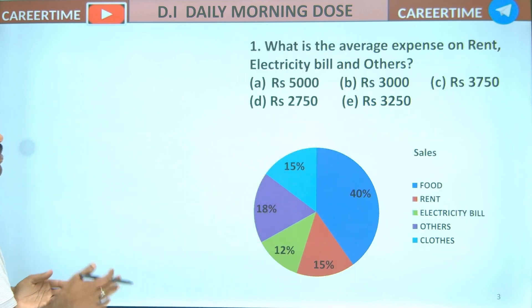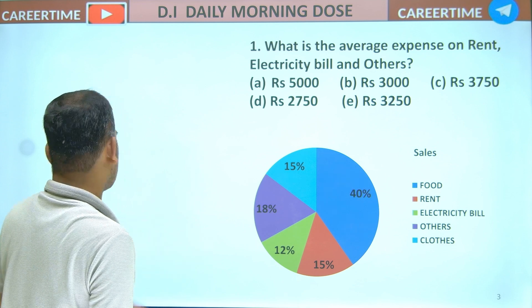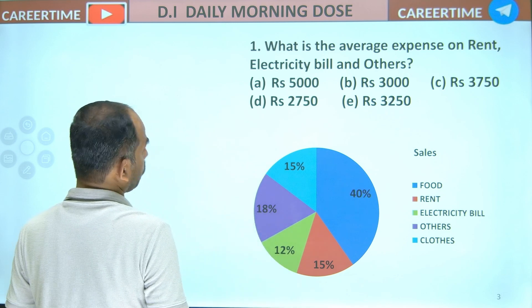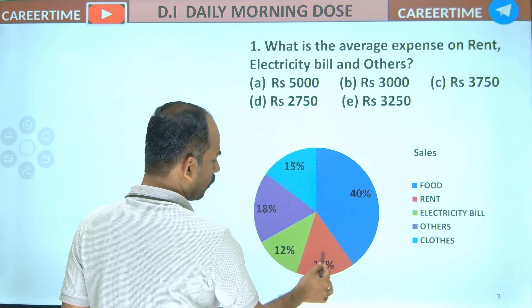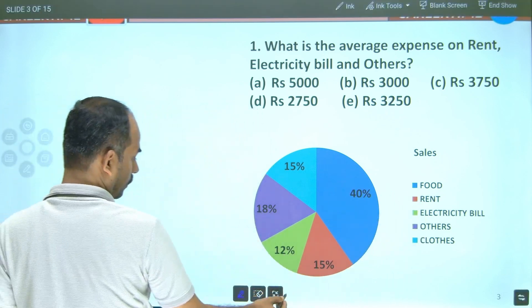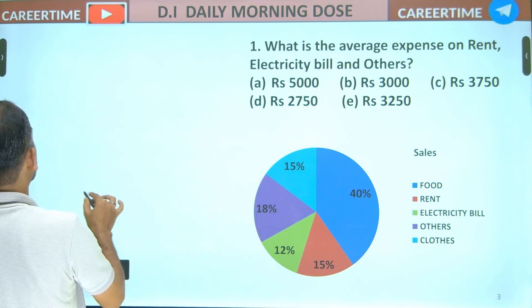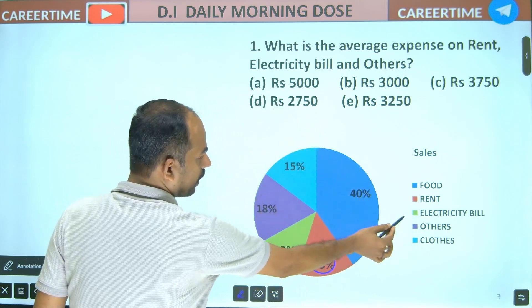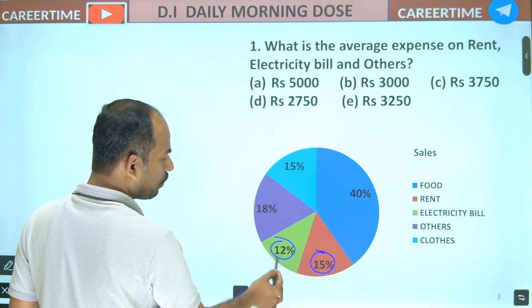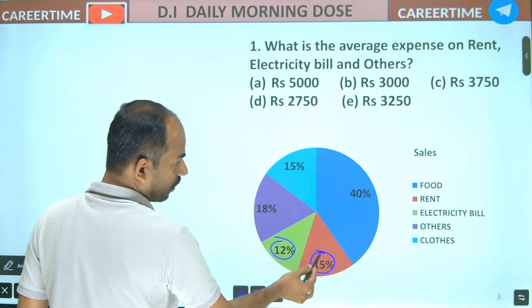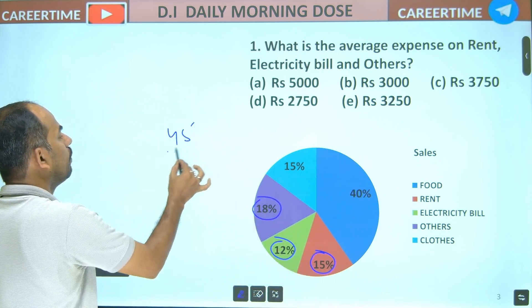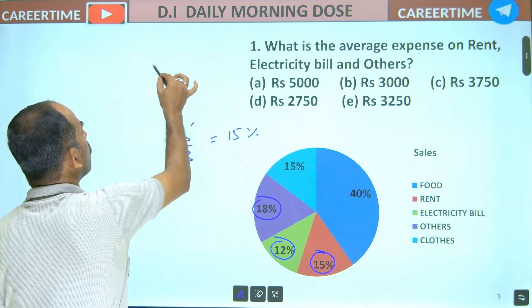What is the average expense on the rent, electric bill, and others? Average expenditure — rent, electric bill: 18, 40, 15. Total.